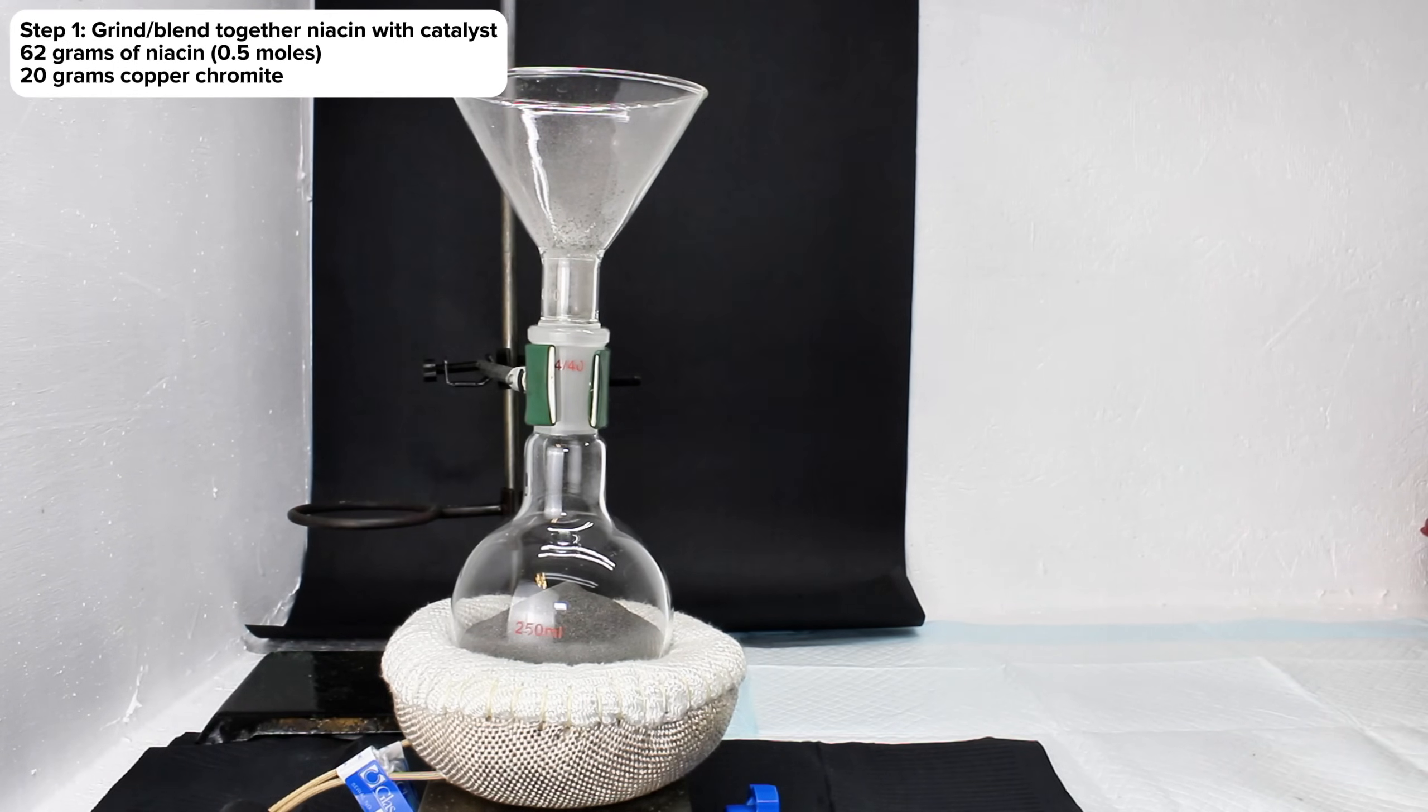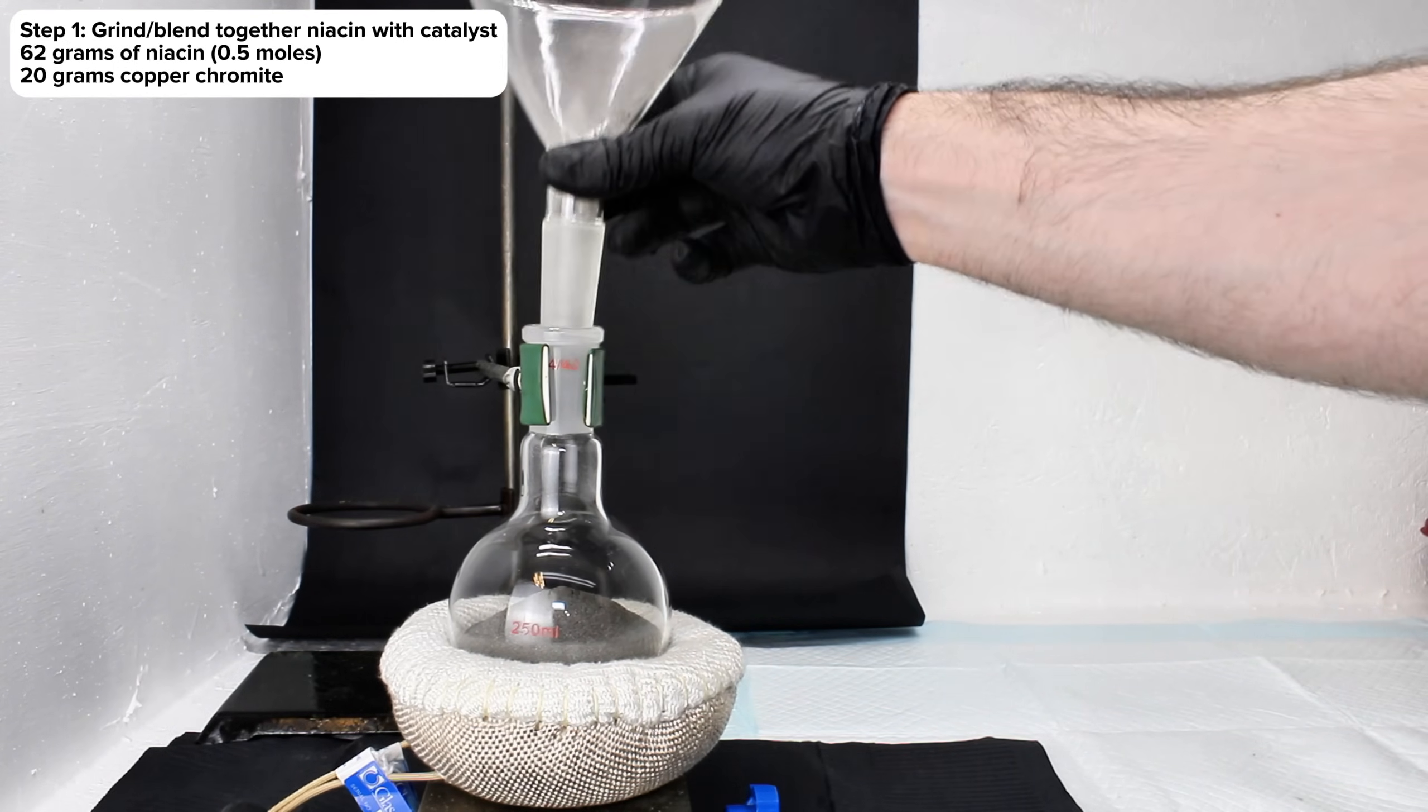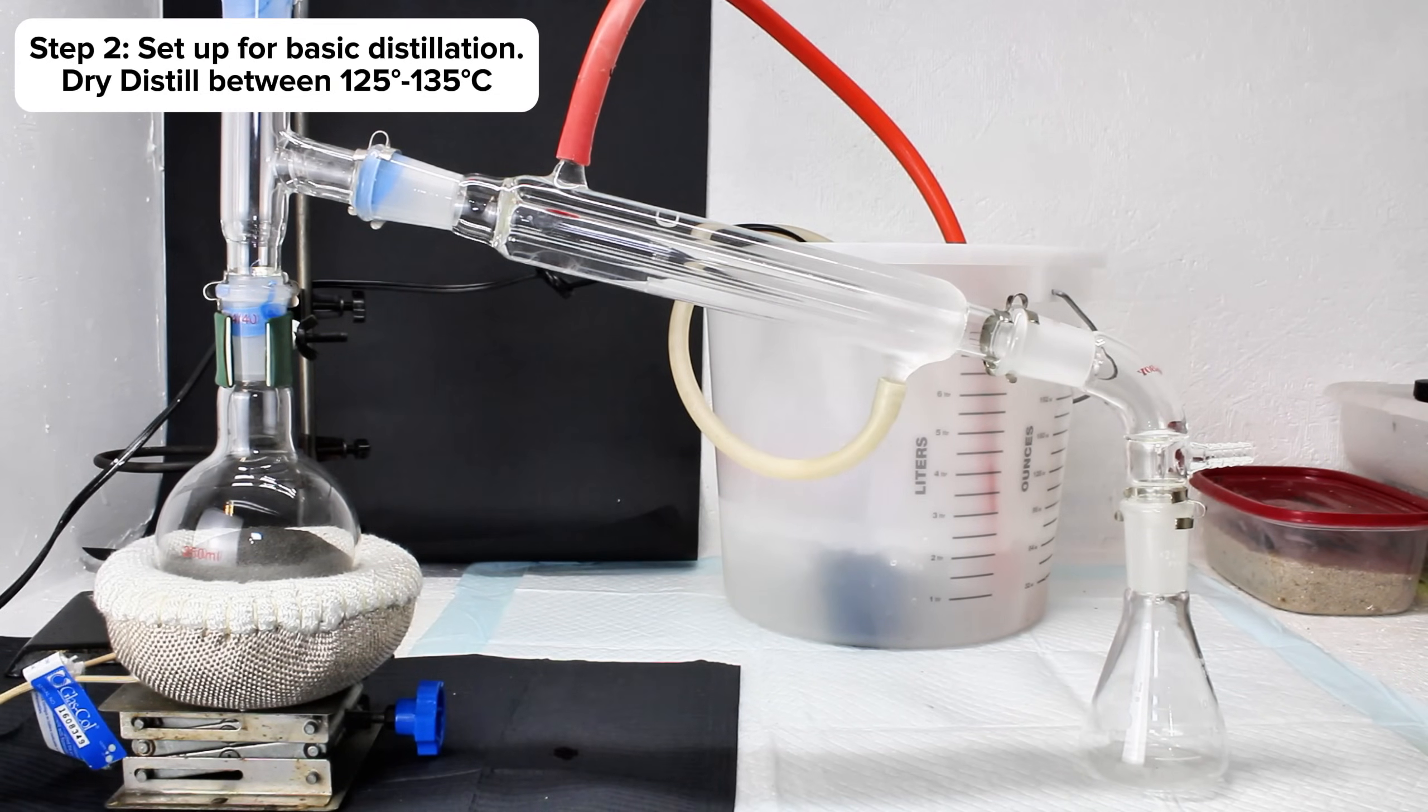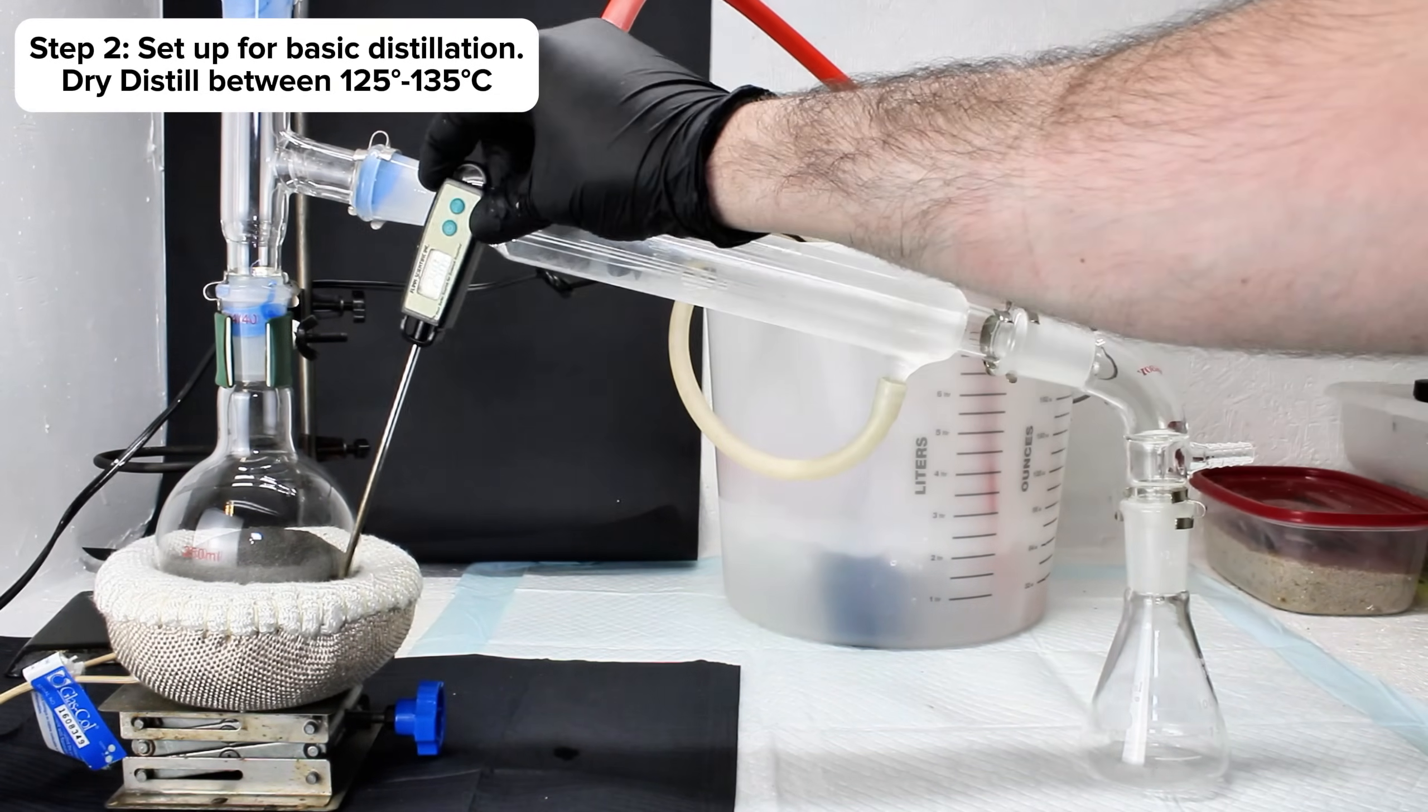Once I felt these two were as evenly incorporated as they were going to get, I poured the mixture into a 250ml round bottom boiling flask and set it up for a basic distillation.